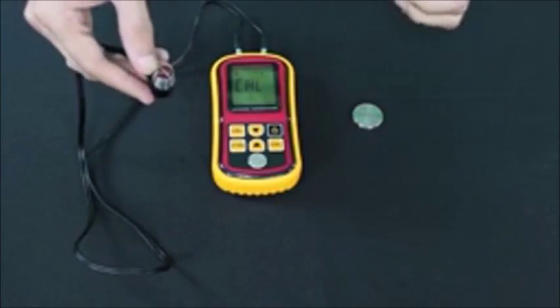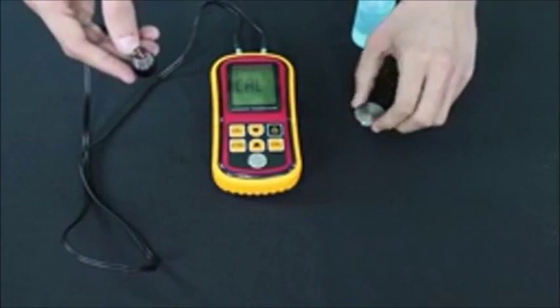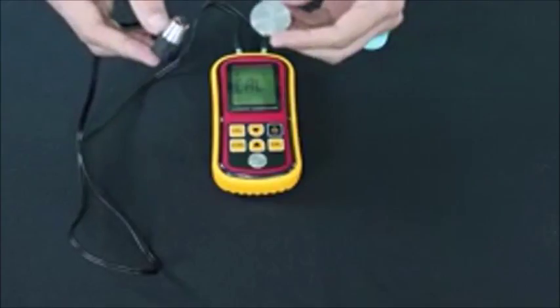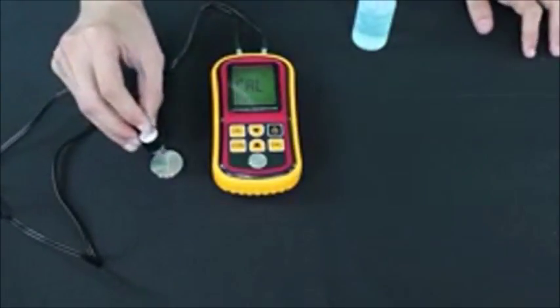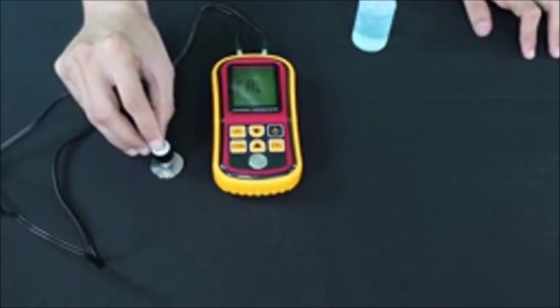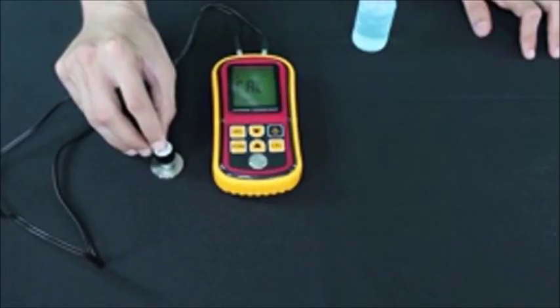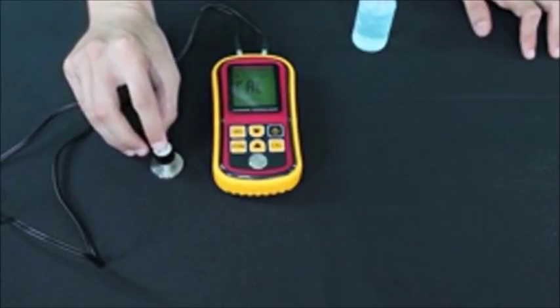First thing you want to do is turn on the thickness gauge by pressing and holding the power button. This is the startup screen. You're going to have to let it go all the way through and we'll start calibrating. Alright, we've got to the main page.